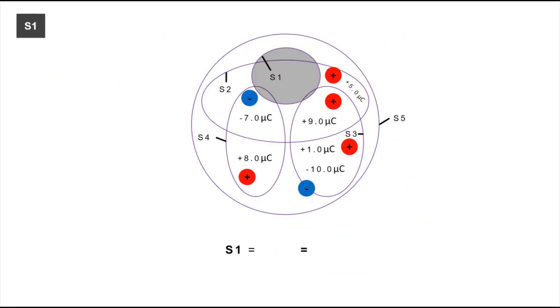S1 is indicated by the gray shaded surface. There are no charges enclosed in that surface, so S1 will be equal to 0 µC.